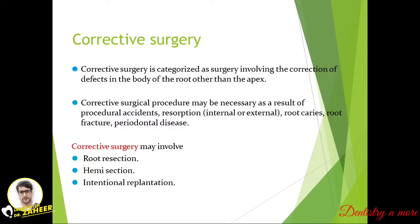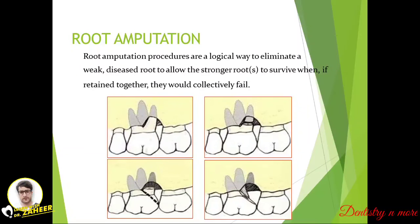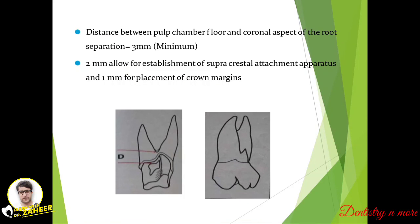Corrective surgical procedures may be necessary as a result of procedural accidents, resorptions (internal or external), root caries, root fracture, or periodontitis. It involves root resection, hemisection, and intentional replantation. Root amputation procedures are a logical way to eliminate a weak, diseased root and allow stronger roots to survive, since if retained together they would collectively fail. The distance between the pulp chamber floor and the coronal aspect of root separation should be 3 mm; 2 mm width is needed for establishment of the supra-crestal attachment apparatus and 1 mm for placement of crown margins.